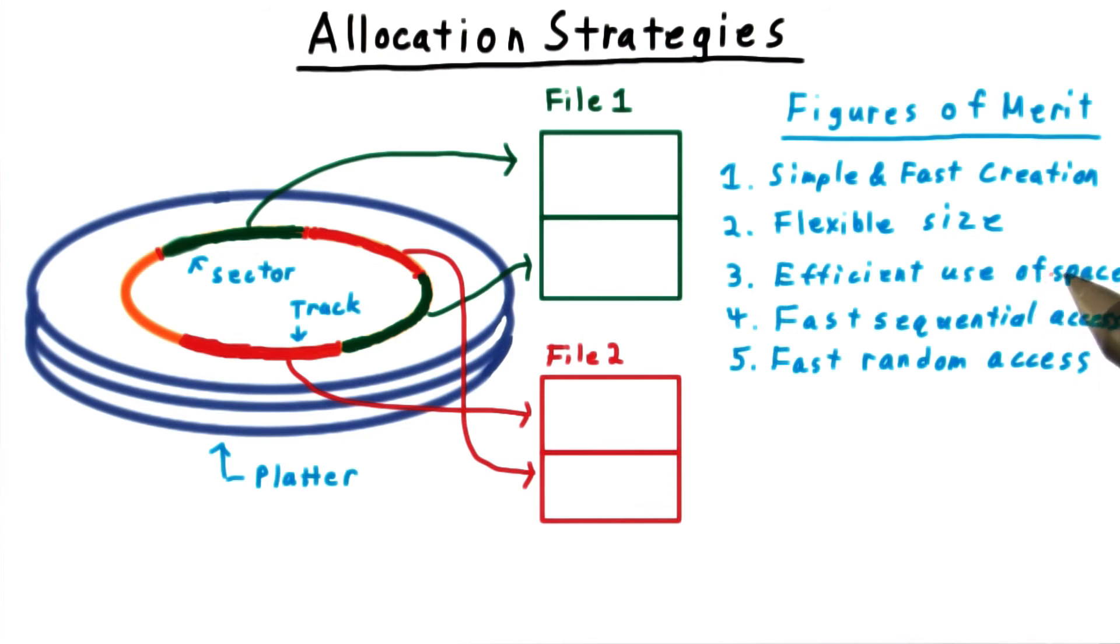And of course, we want an efficient use of disk space. And we want fast access. Sequential refers to reading a file in sequence from start to finish, and random access refers to jumping around in the file.